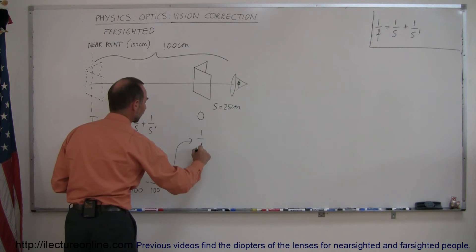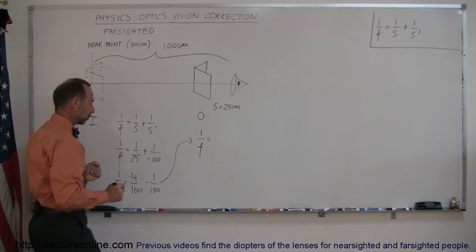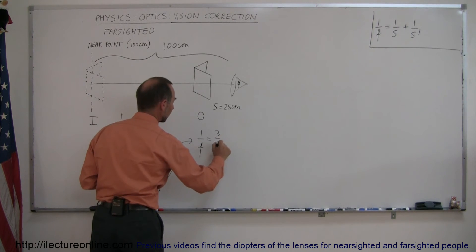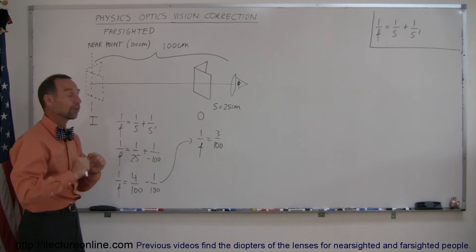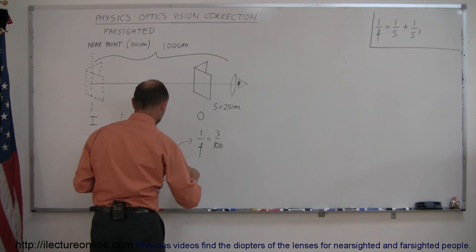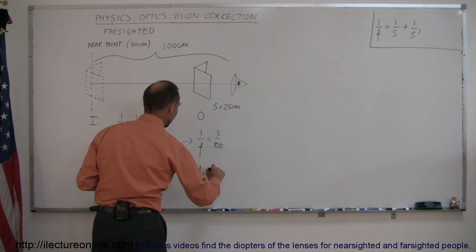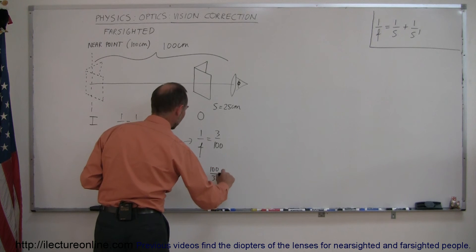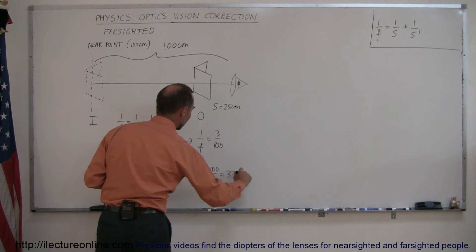Which means that 1 over f is equal to 4 minus 1, which is 3 over 100, which means if I turn the equation around, I get f is equal to 100 over 3, which is equal to 33 centimeters.